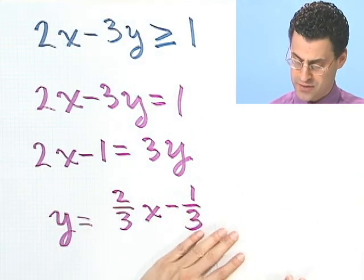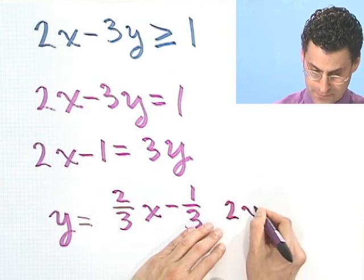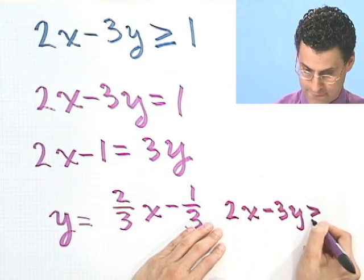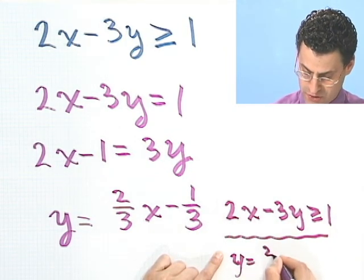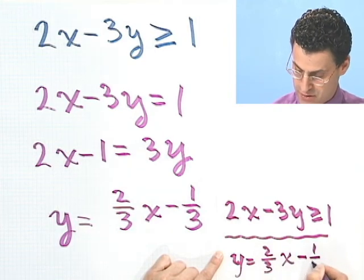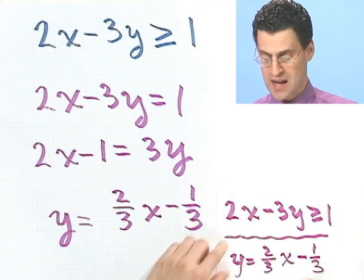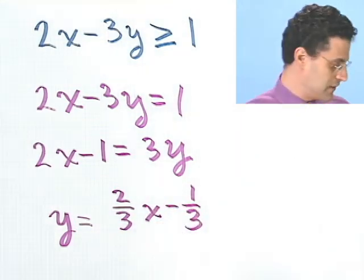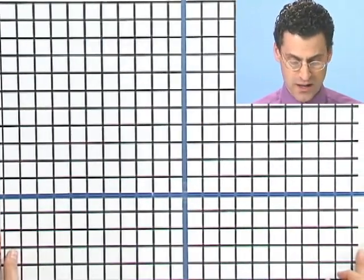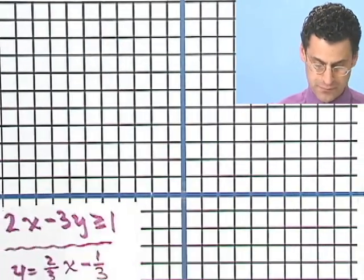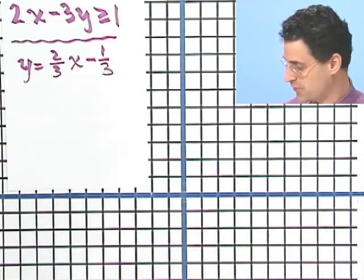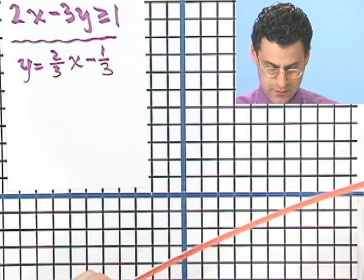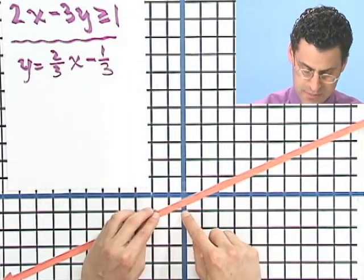What I'm going to do here is record the original question, and then write down this auxiliary thing: y equals 2 thirds x minus 1 third. This represents the boundary, and this is going to be one of the regions. Let's actually see what this would look like graphically. Well, we have this line, and we know its y-intercept is negative 1 third, so I've got a line, and its intercept is negative 1 third.